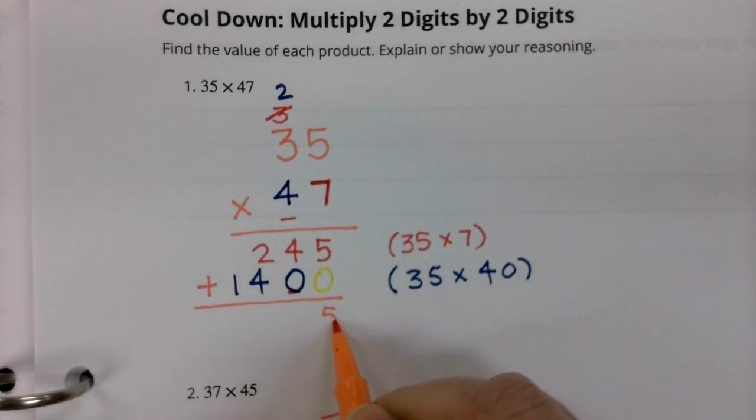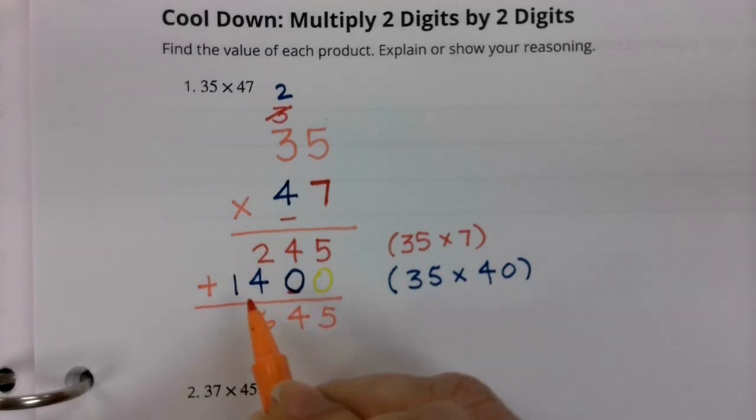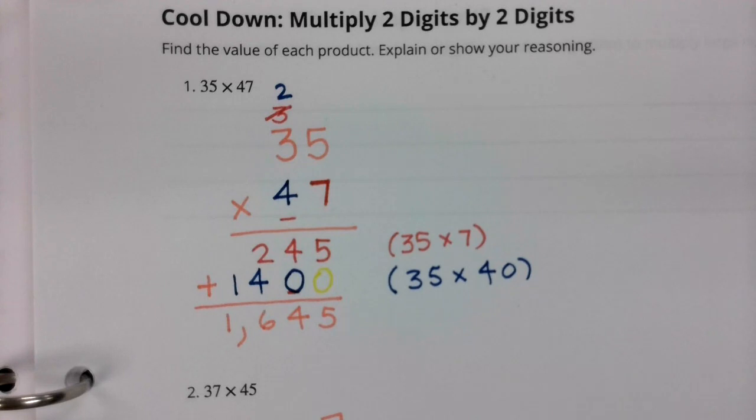Five plus zero is five. Four plus zero is four. Two plus four is six. And one plus nothing is one. So my answer to this question is 1,645.